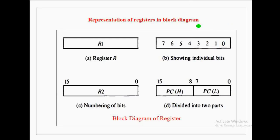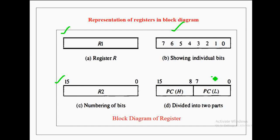In this diagram, various ways for representing registers in block diagrams are shown. In the first case, the name of the register is written inside a rectangular box. In the second case, the individual bits of the register are shown separately. The numbering of the lowest byte and highest byte are written on top of the rectangular box.